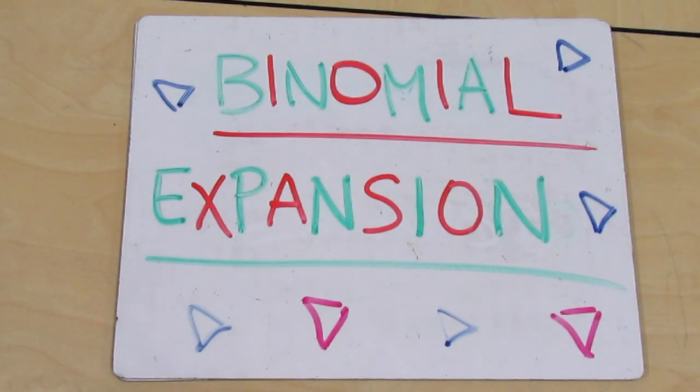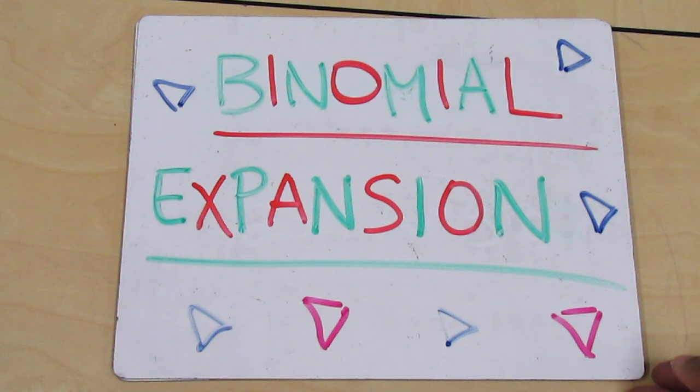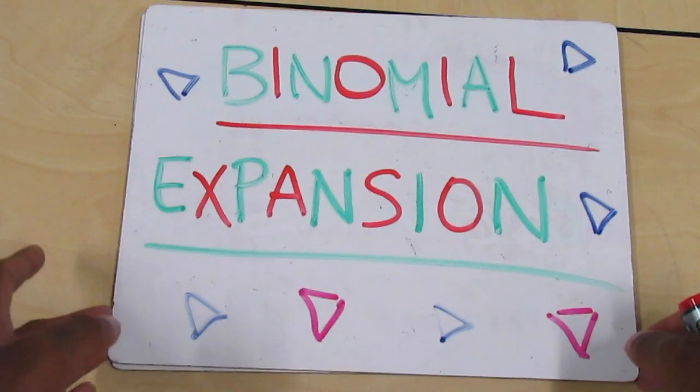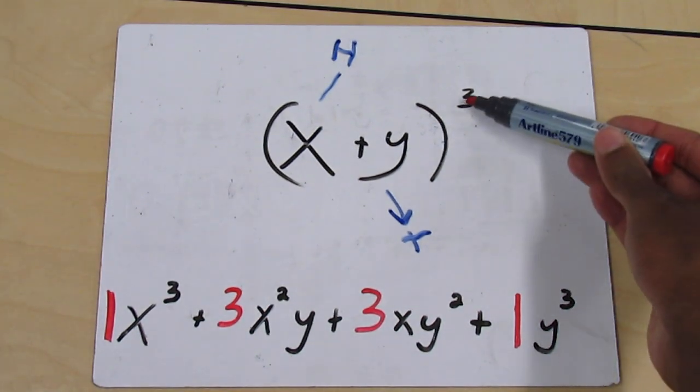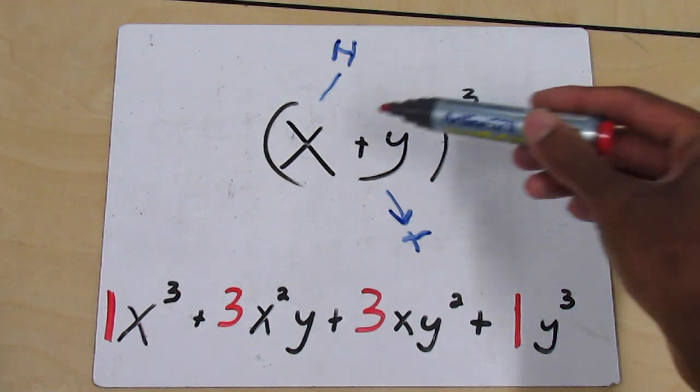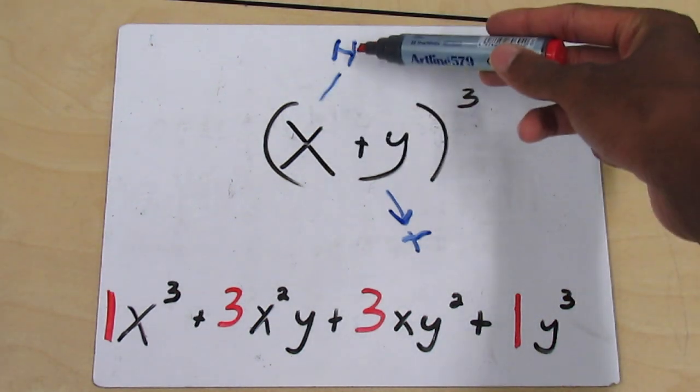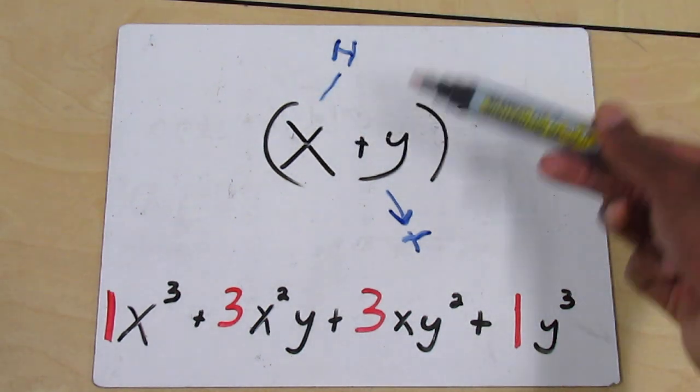Another use of Pascal's Triangle is in binomial expansion. So let's look at a problem here. Say that you want to flip a coin three times and you want to see whether it will land on heads or tails. So you have your x and y, and you know that you want to flip it three times.